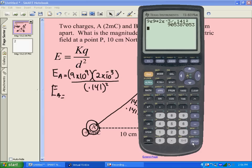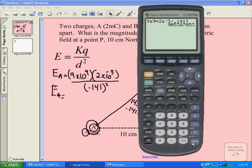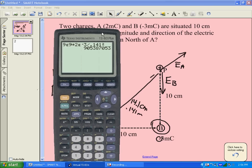9.05 times 10 to the 8 newtons per coulomb. That's what the electric field, because of A, is. Okay, so we'll bring this up.